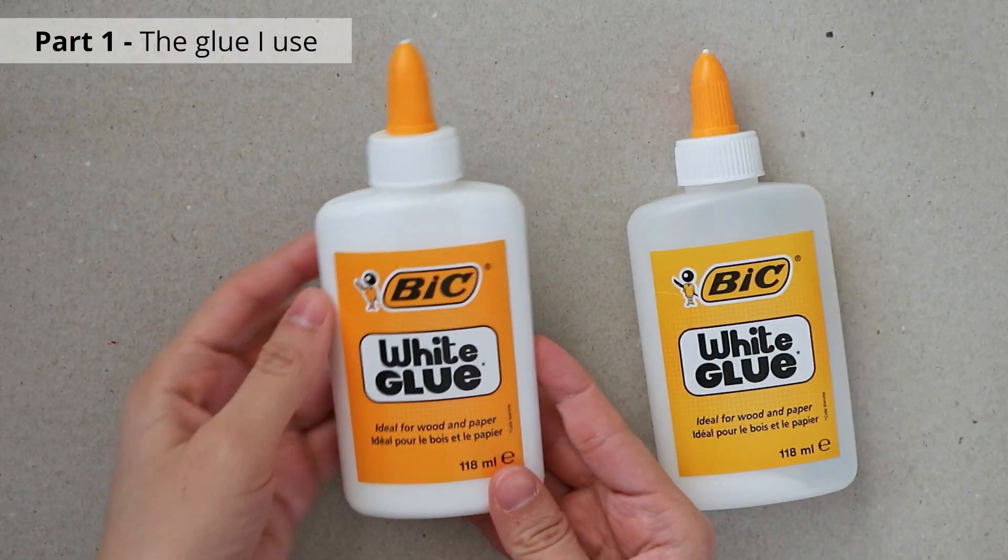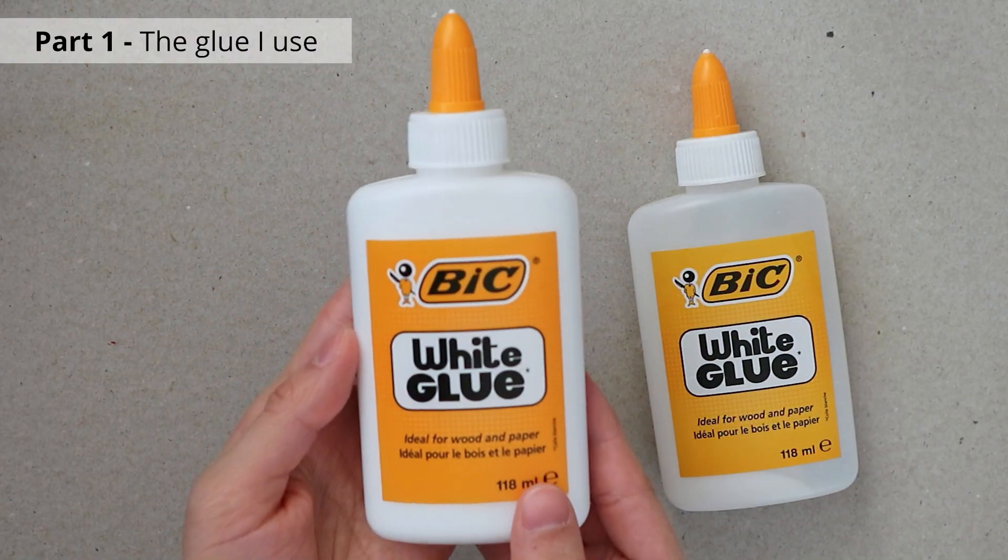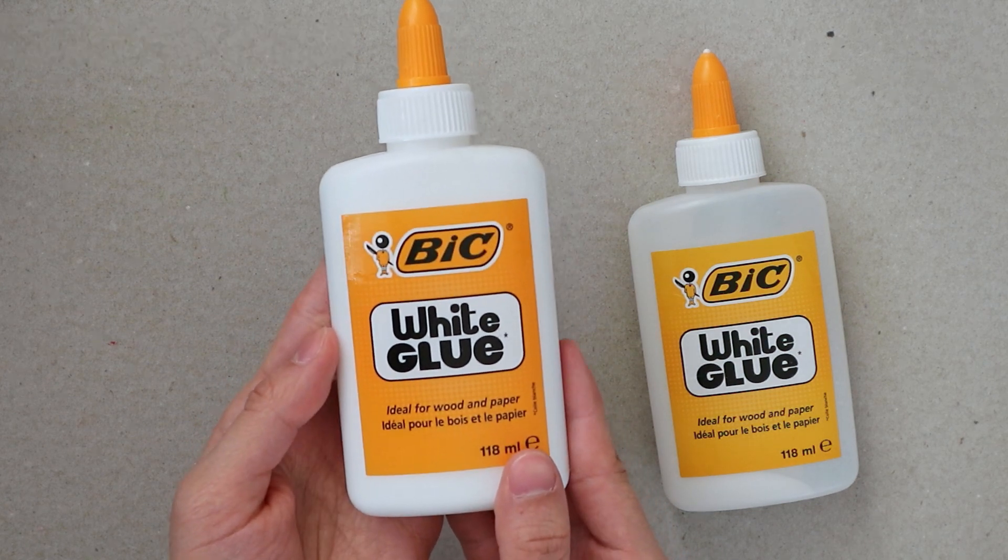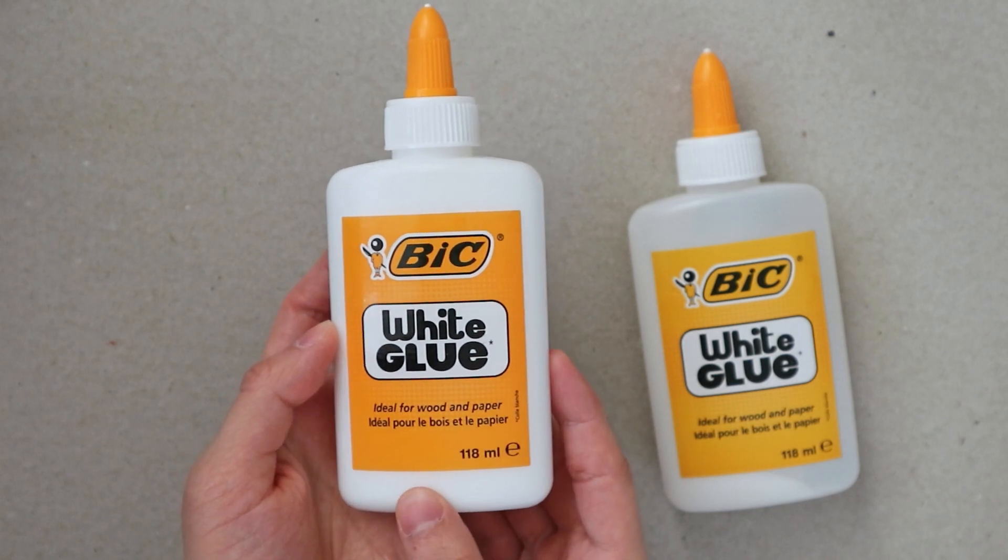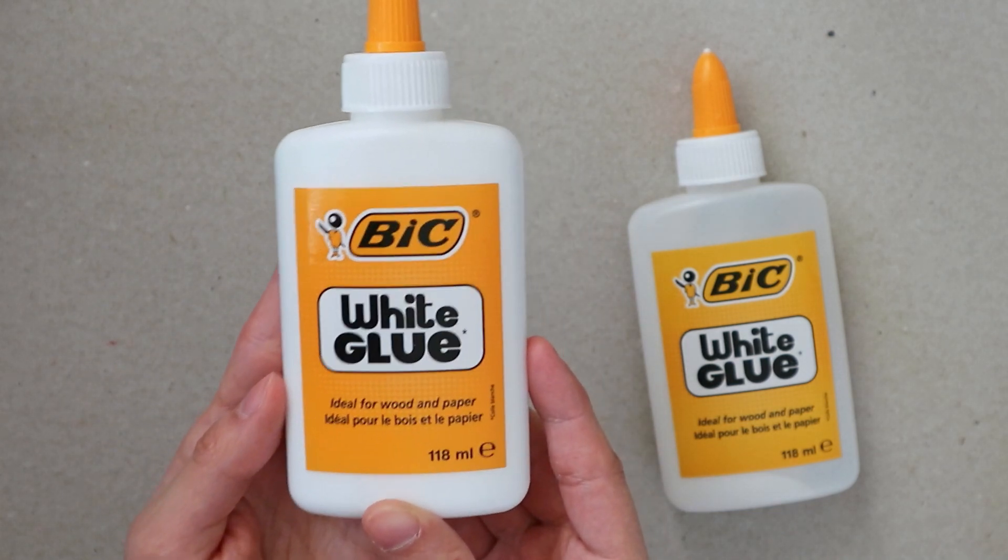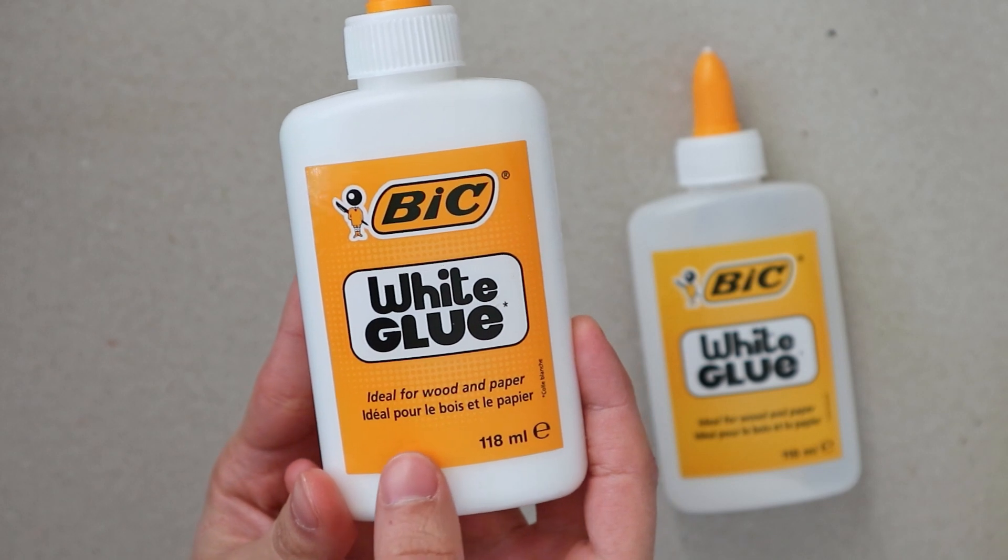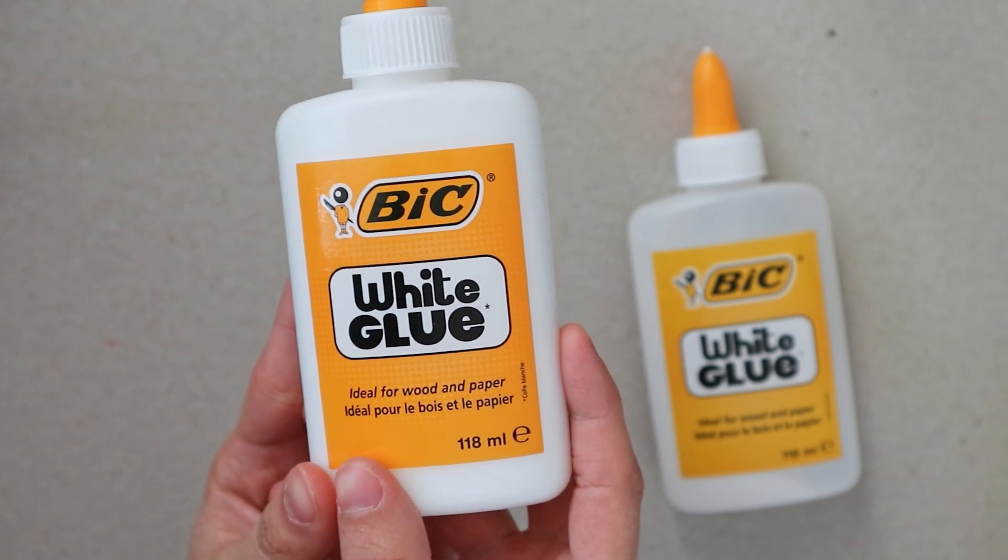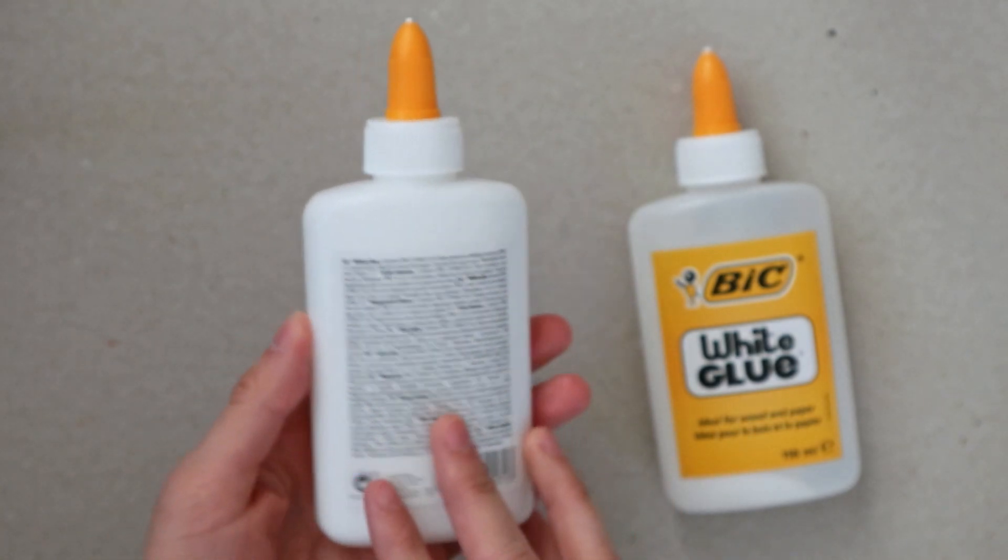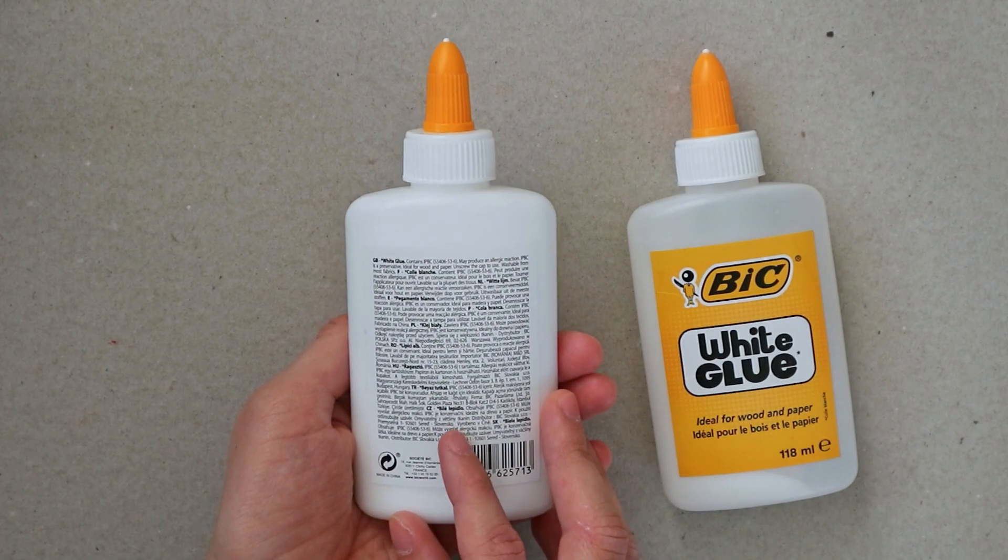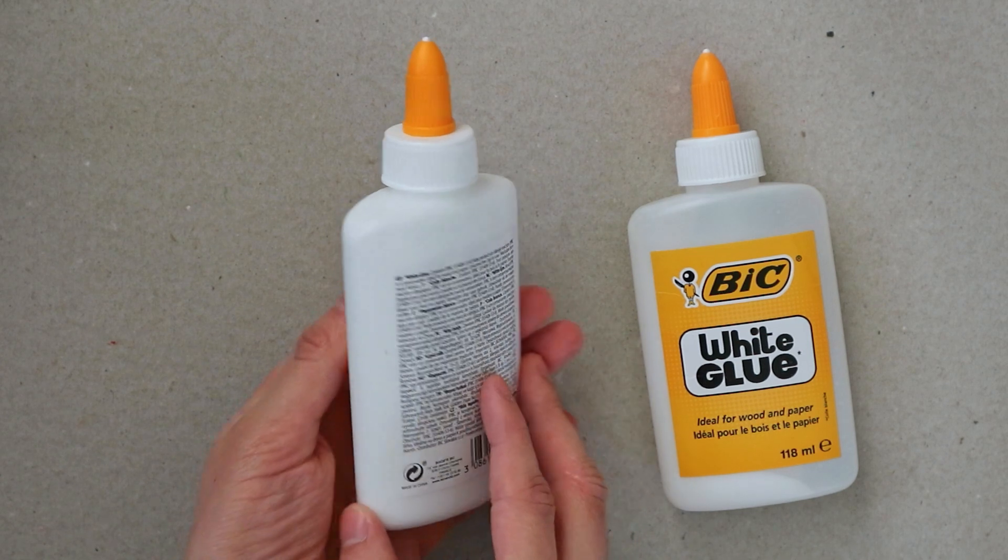First things first, let me say a few words about the glue. The glue that I use in most of my quilling projects comes from the brand called BIC. I usually buy it from the craft section or school section of stores like supermarkets. It's a white glue and it's ideal for wood and paper.